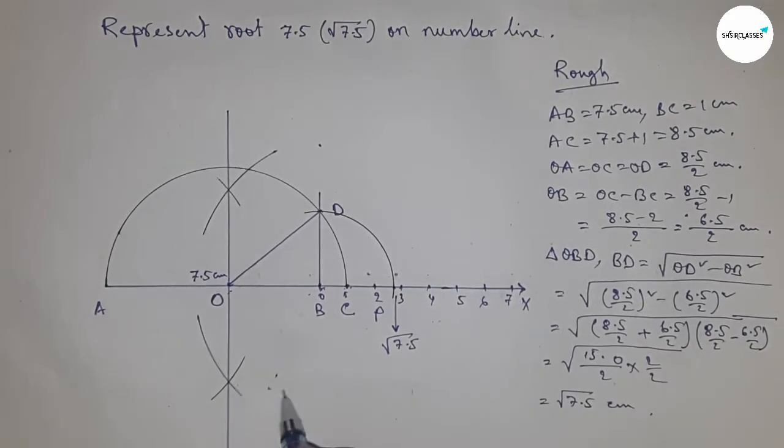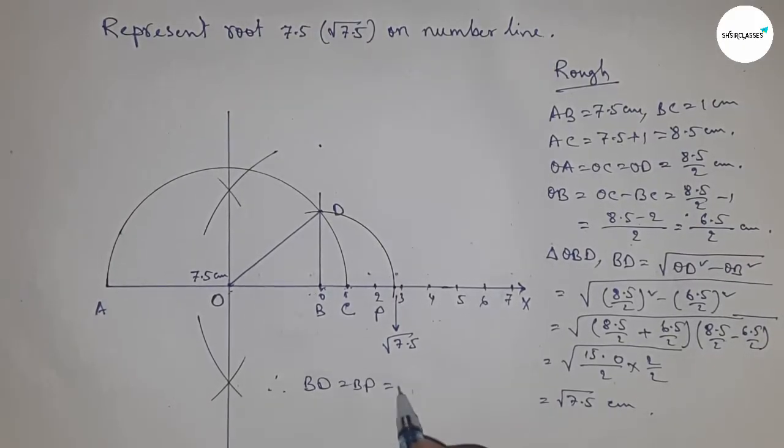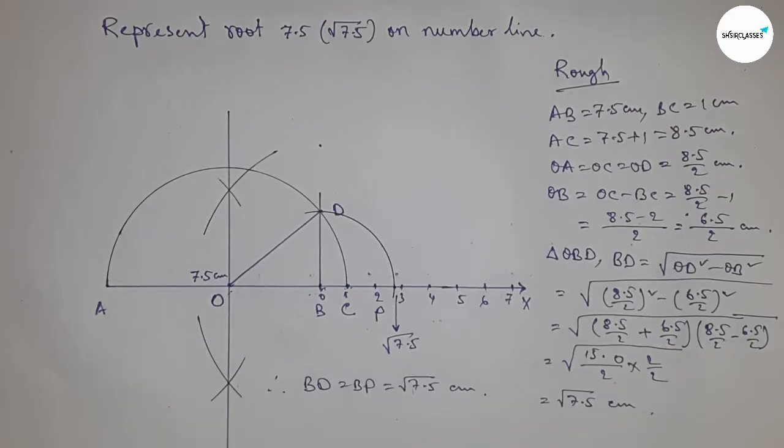So this is 7.5 centimeters. Therefore, distance BD and BE are equal to root 7.5 centimeters. That's all. Thanks for watching. Please subscribe, like, and comment on my video. Thanks for watching.